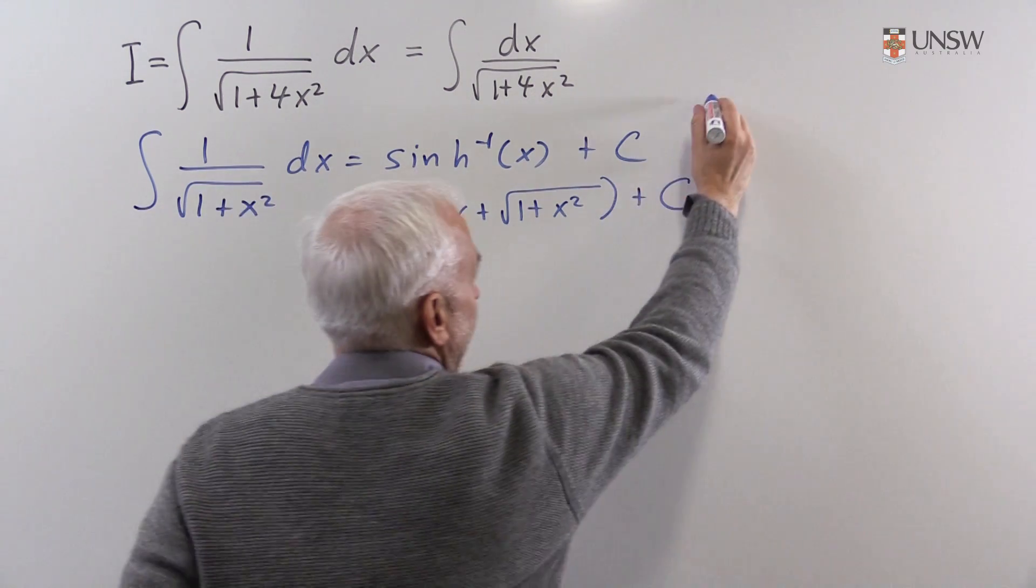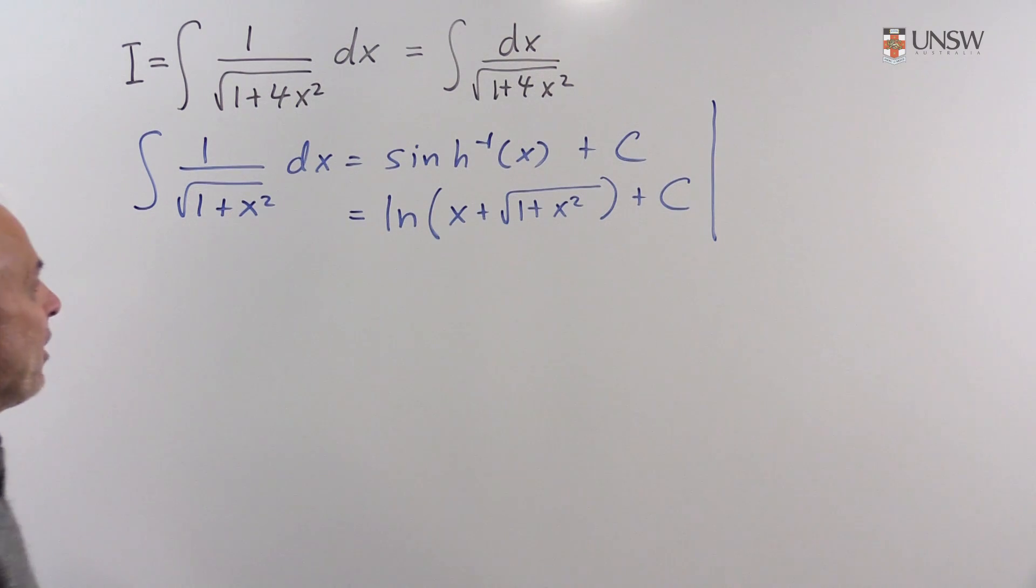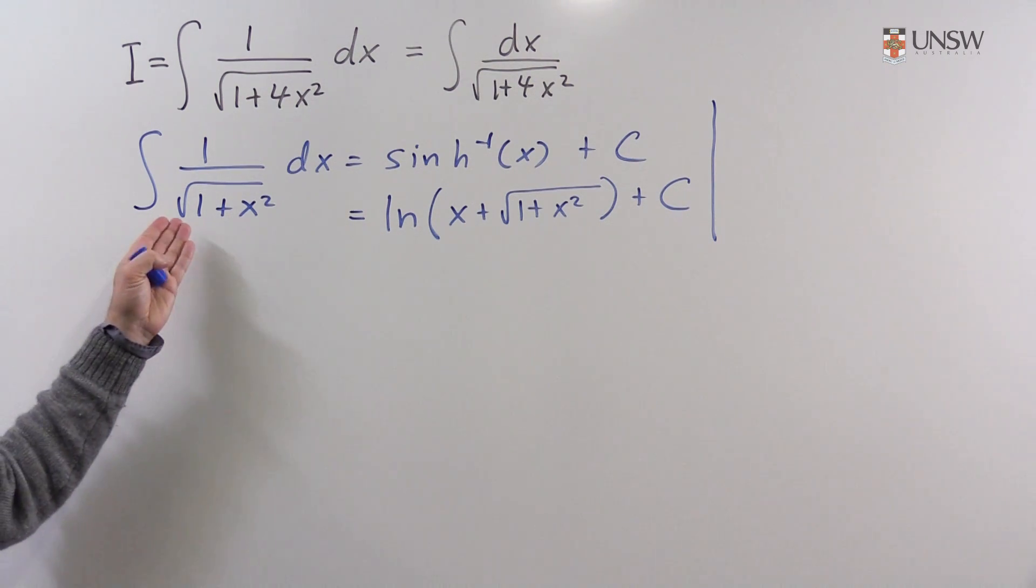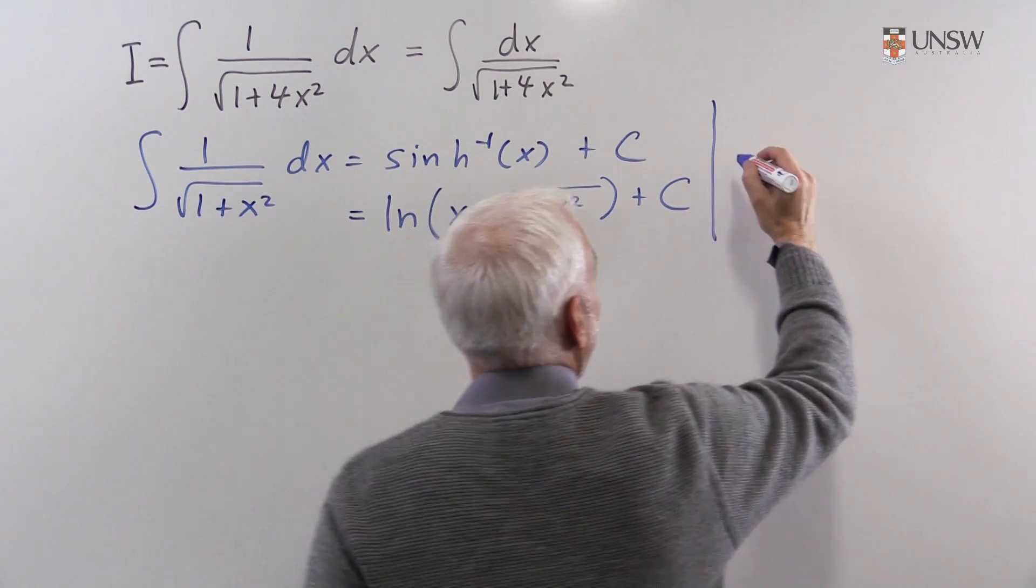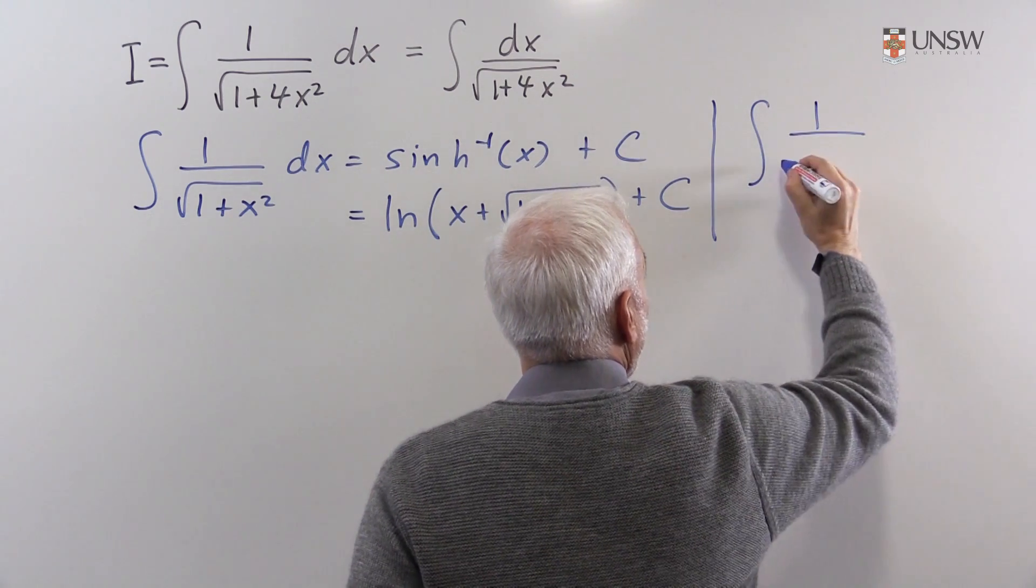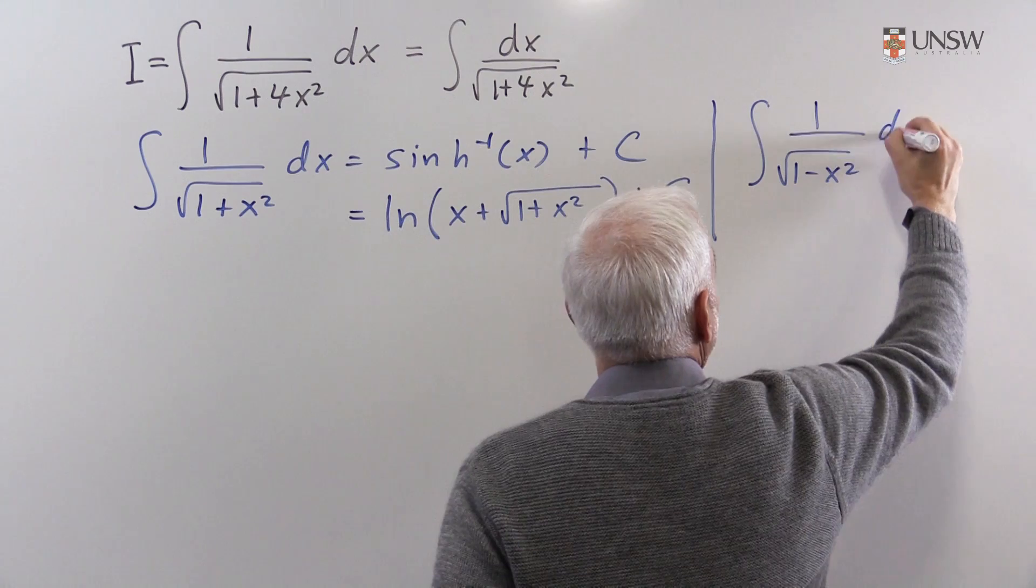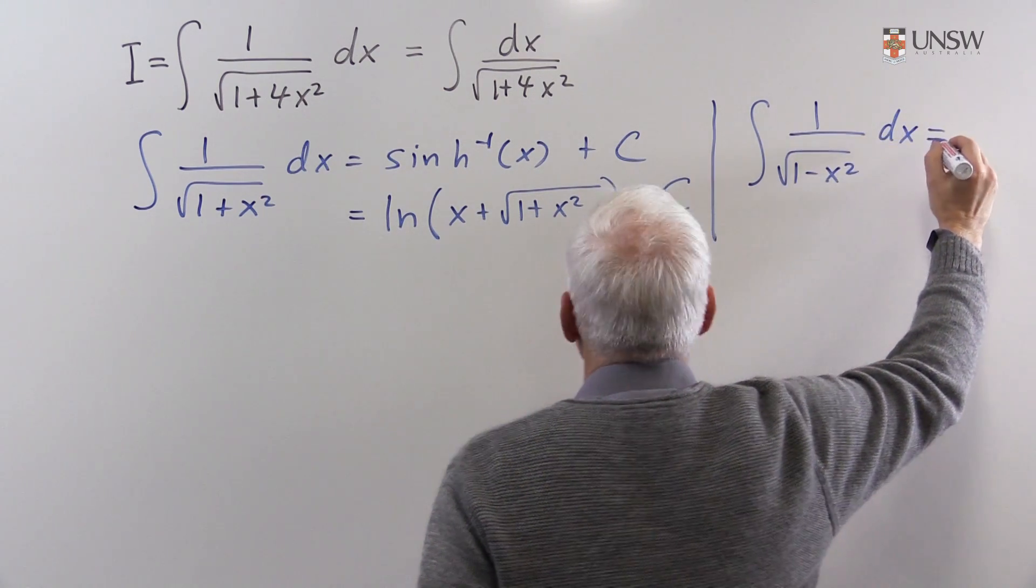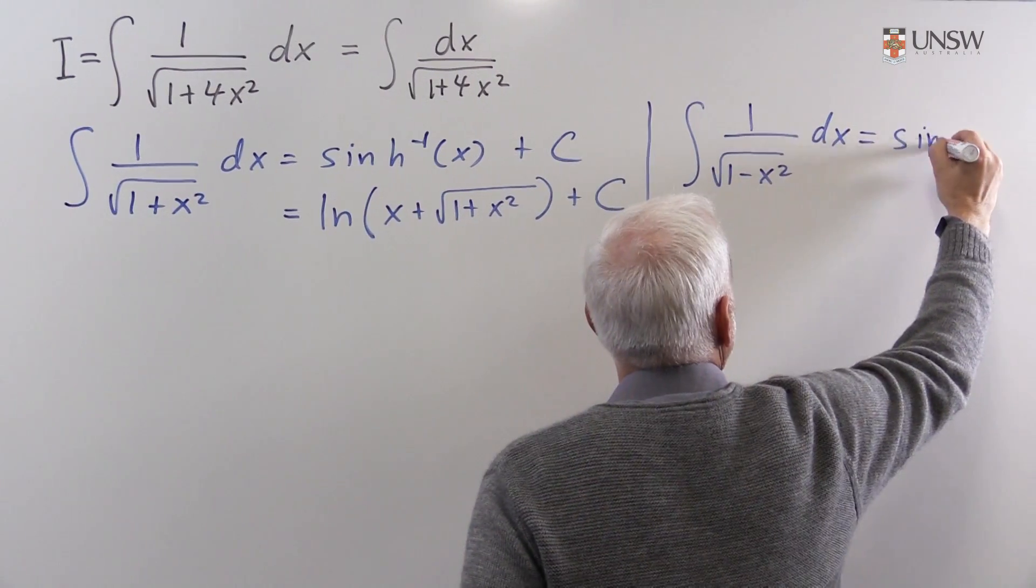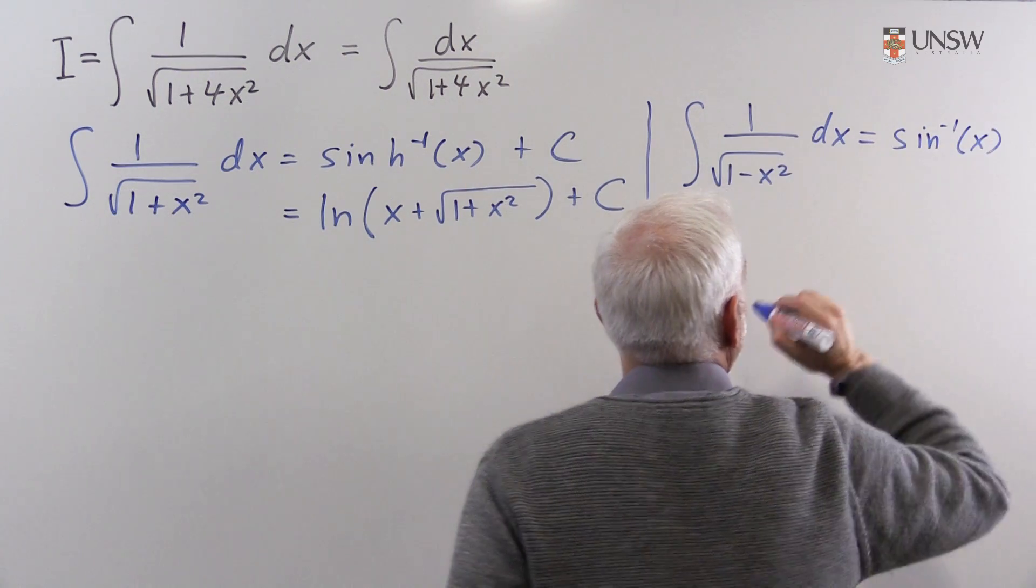And I want to contrast that to a corresponding formula where we replace the plus sign there with a minus sign. So 1 over square root of 1 minus x squared dx equals sin inverse of x plus a constant.